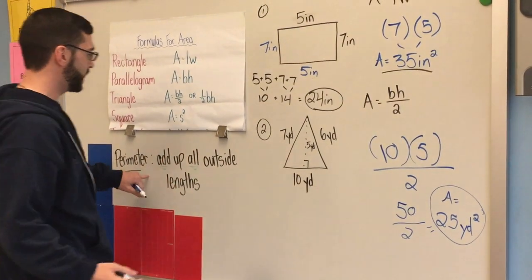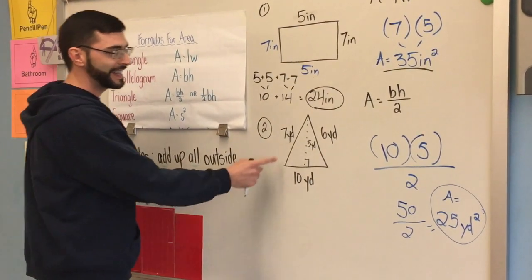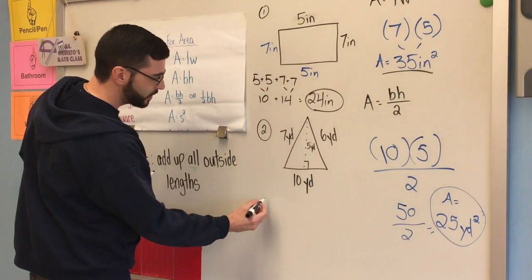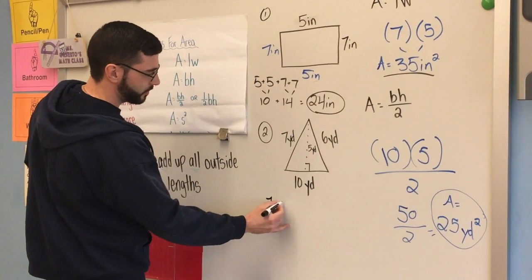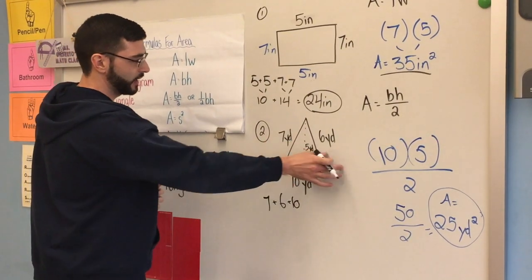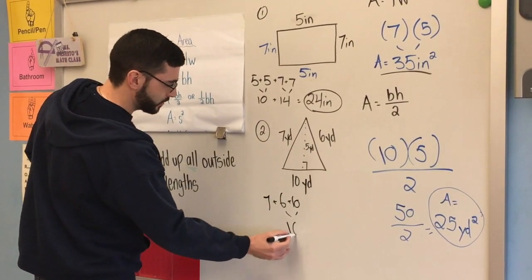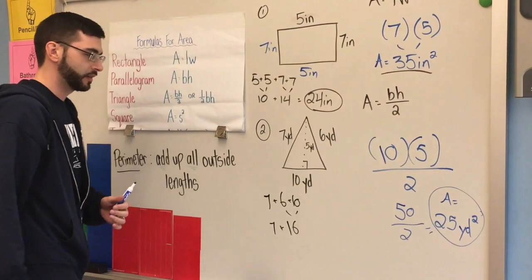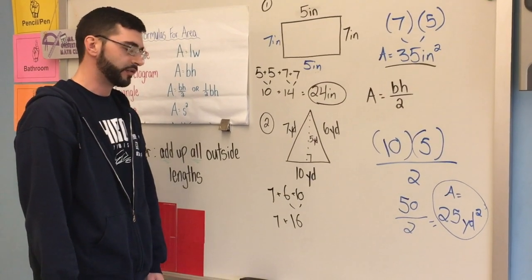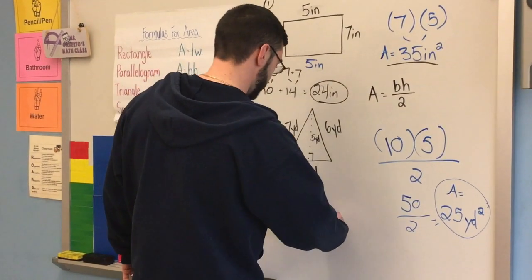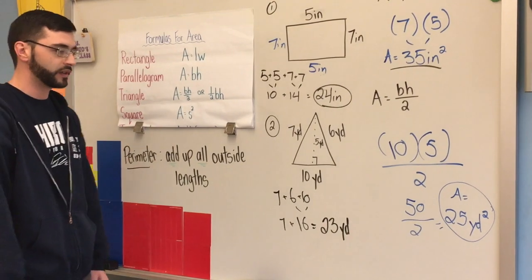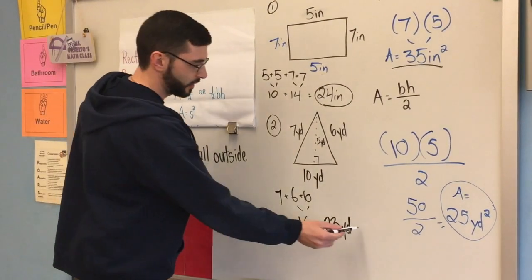The last thing we need is perimeter. So I have to add up all my outside lengths. This is a good example because there's an inside length here. That's the height. We're not including that for perimeter. So for outside, I have seven plus six plus ten. Six plus ten is sixteen. Seven plus sixteen, that would give me 23. And again, I keep the unit of measurement. So my perimeter is 23 yards.